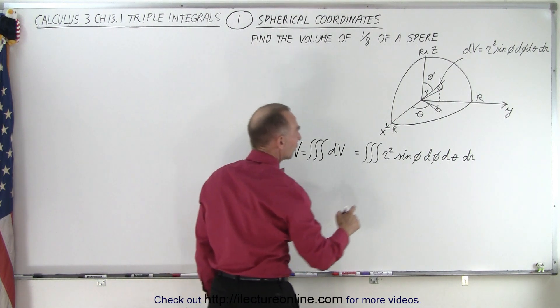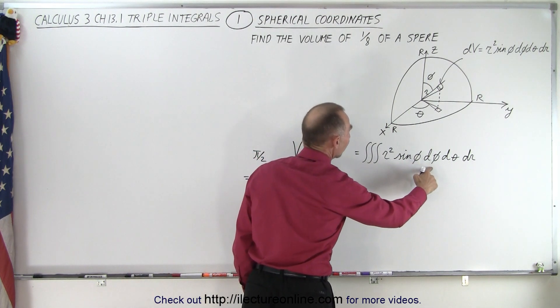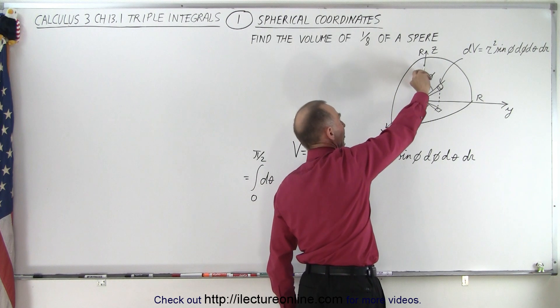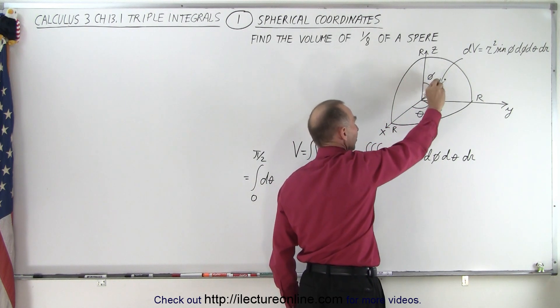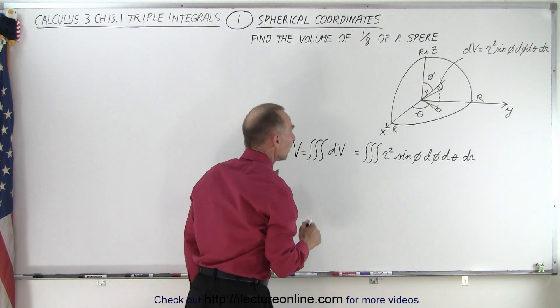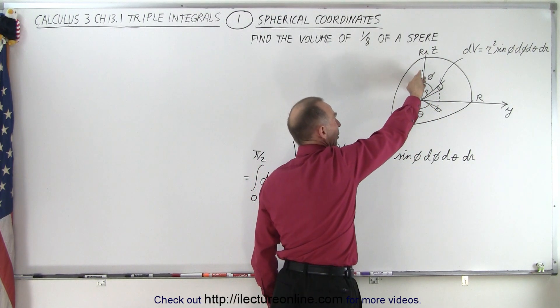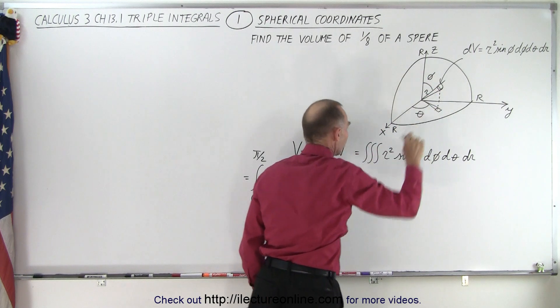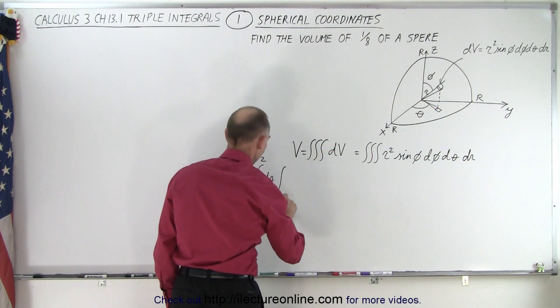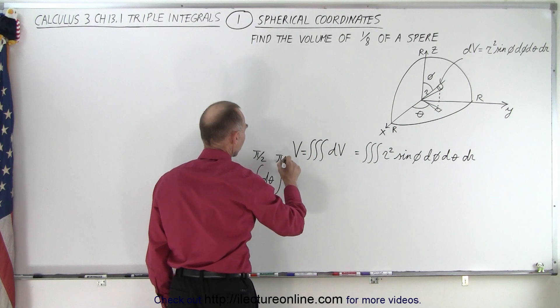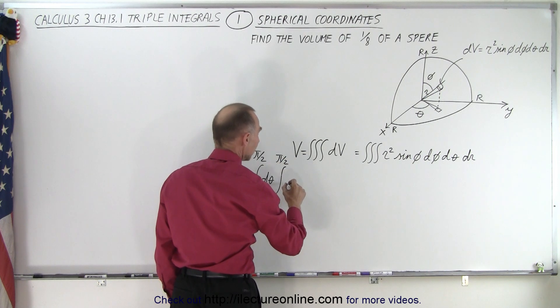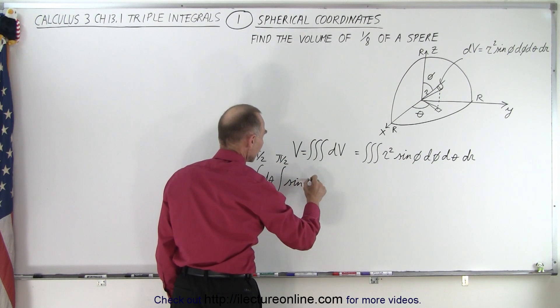And then we are going to integrate the sine of phi times d phi, which is the projection from the z-axis downward, that's that angle, that's the phi angle. And notice that we would have to integrate also from 0 to pi over 2 as we go all the way from the vertical to the plane.